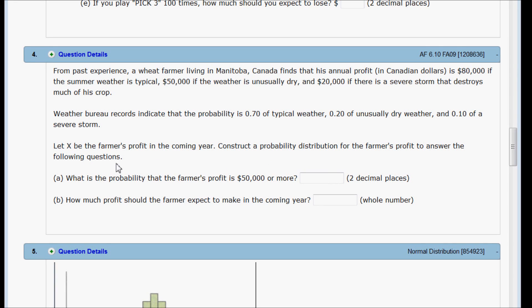In question 4, you're given some information about a farmer's profit in the coming year. I think answering these two questions is easier once you do this: construct a probability distribution for the farmer's profit.